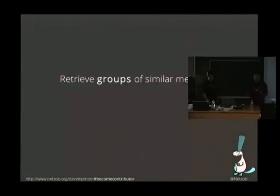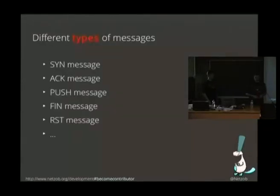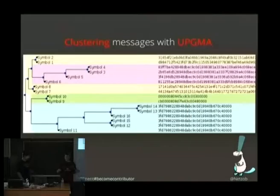The next step is to regroup similar messages in specific groups. If we take the example of TCP, you have many types of messages that are defined by their flags, and we want to be able to automatically retrieve the different groups, different kinds of messages or commands. So we use a clustering approach. In the clustering field we use the UPGMA algorithm which is taken from the bioinformatics domain, and we use a similarity function to compare messages. With the clustering algorithm we are able to make groups of similar messages.